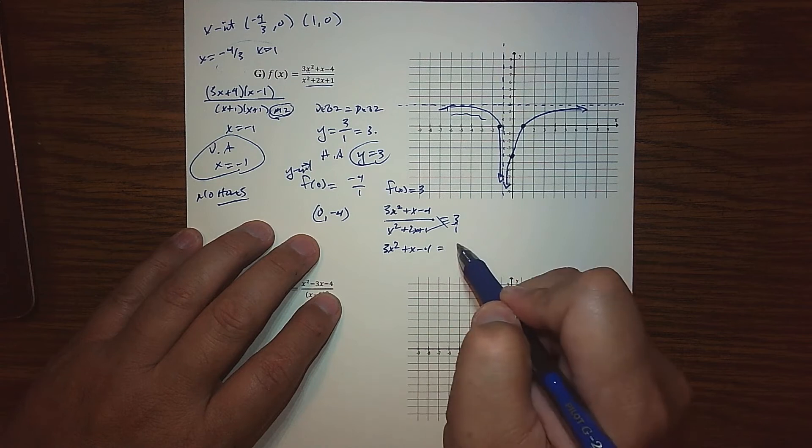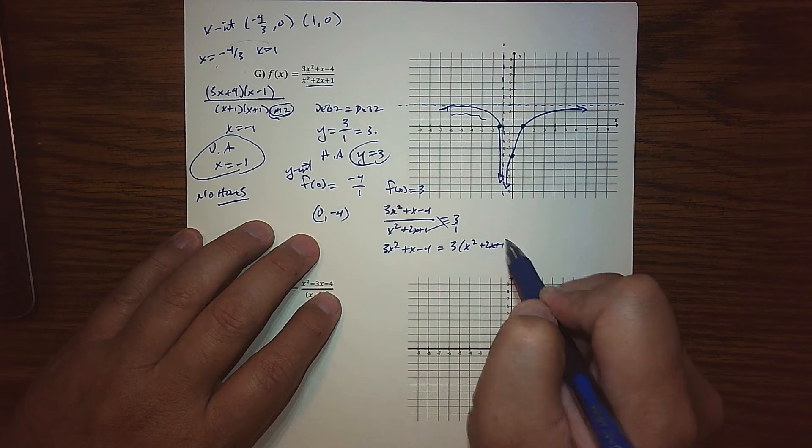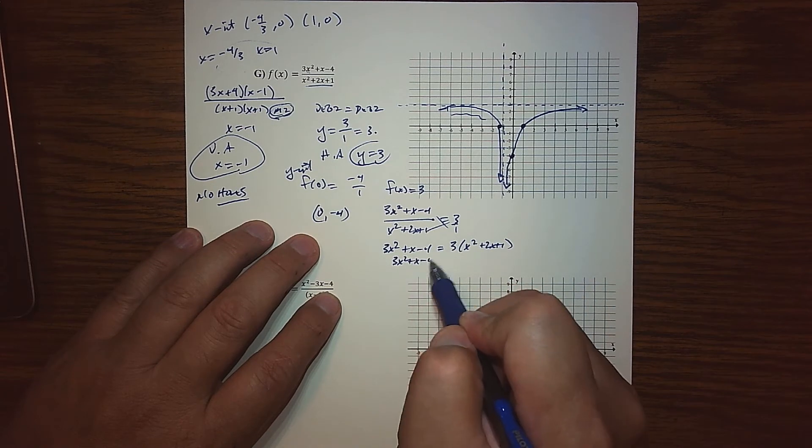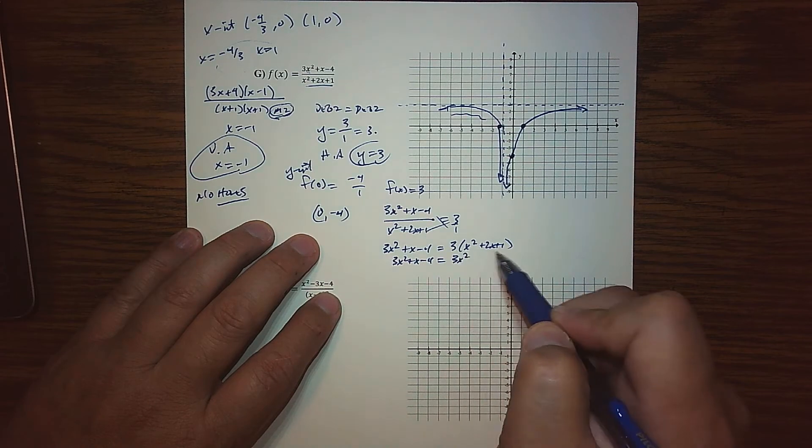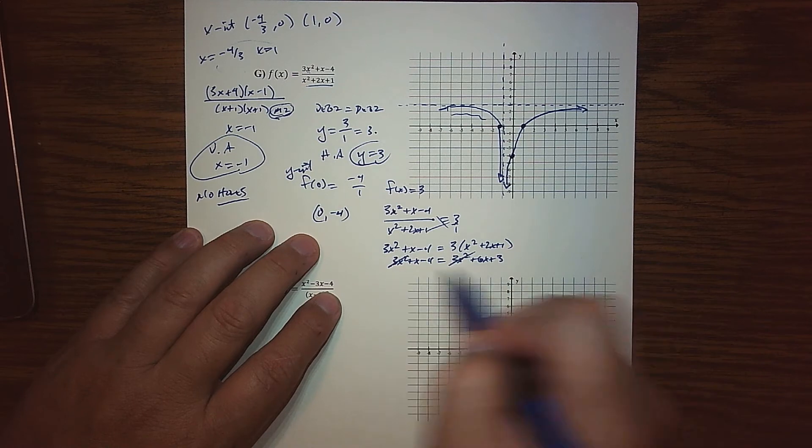Treat that as 3 over 1 and do a quick cross multiplication. We get 3x squared plus x minus 4. This would be 3 times x squared plus 2x plus 1. So 3x squared plus x minus 4.